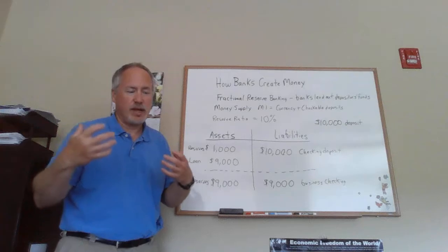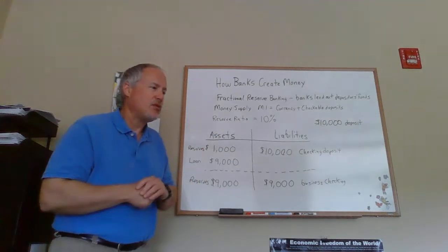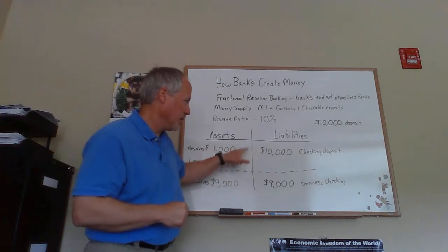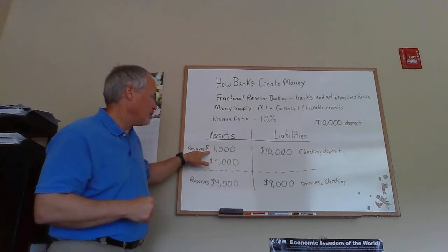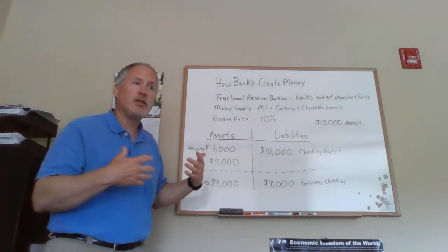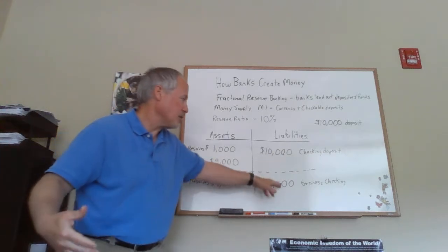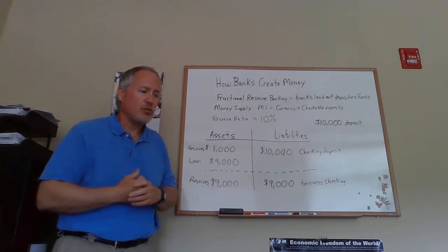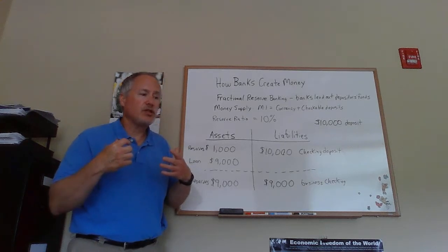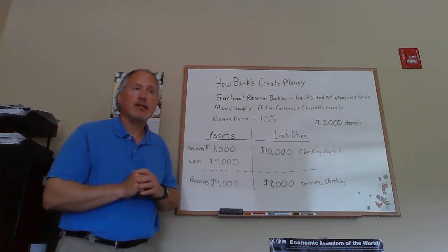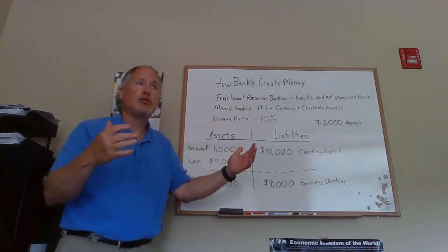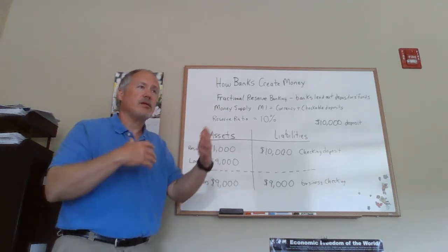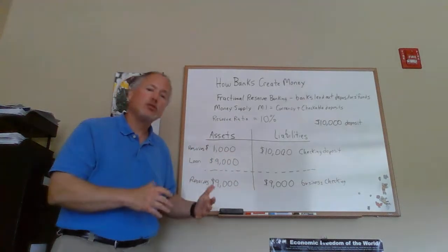Banks create money in this fashion, which is important for understanding monetary policy. The key takeaway: new reserves must come into the banking system first. When new reserves come in, banks can make loans, and those loans increase the money supply. The Federal Reserve can inject reserves into the banking system to increase the money supply, or remove reserves to reduce it — giving the Fed the ability to control the money supply.